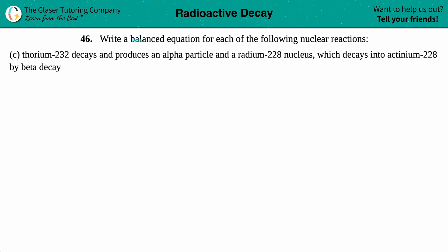Number 46. Write a balanced equation for each of the following nuclear reactions. Letter C: thorium-232 decays and produces an alpha particle and a radium-228 nucleus, which then decays into actinium-228 by beta decay. So it seems like we have two different reactions here. The first part said we have to write a balanced equation for when this thorium decays and produces the alpha particle and the radium. And then the radium is going to decay again into actinium by beta decay.